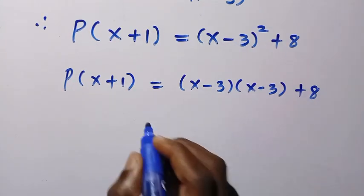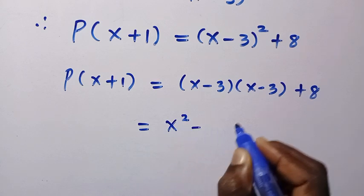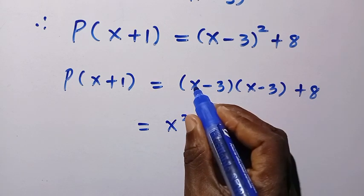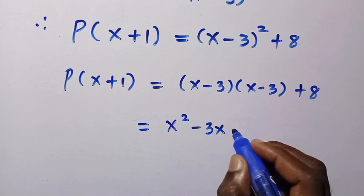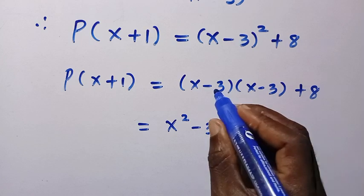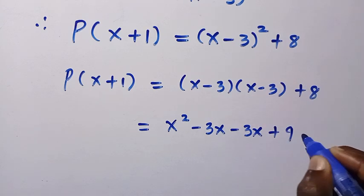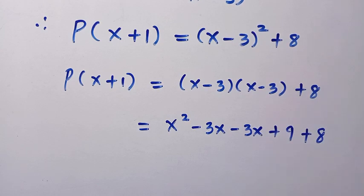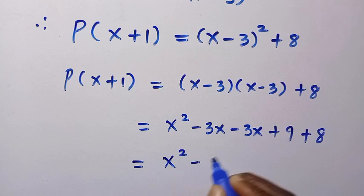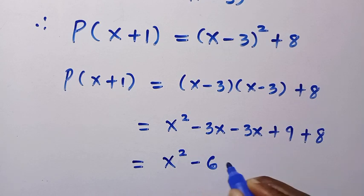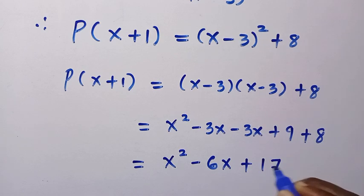Here we have to multiply this out. x times x gives us x², minus, here we have x times minus 3, that is minus 3x, minus 3 times x, minus 3 times minus 3, that is plus 9, then plus 8 which is not part of the bracket. This equals x² minus 3x minus 3x, that is minus 6x, then plus 9 plus 8, which gives us 17.